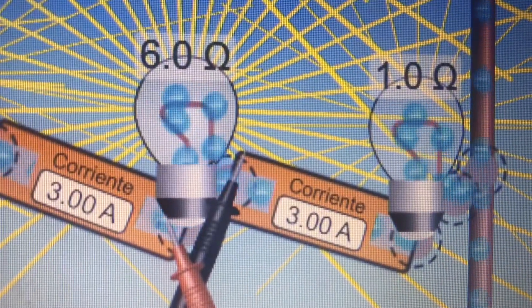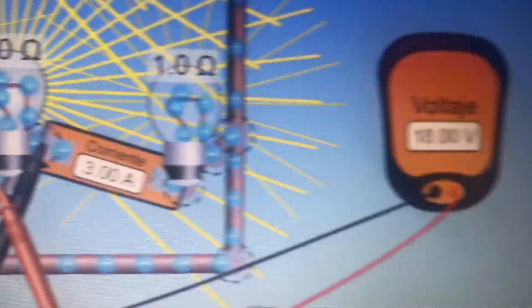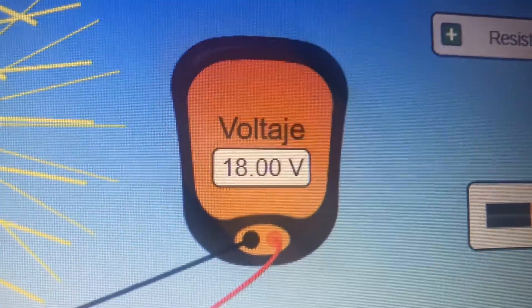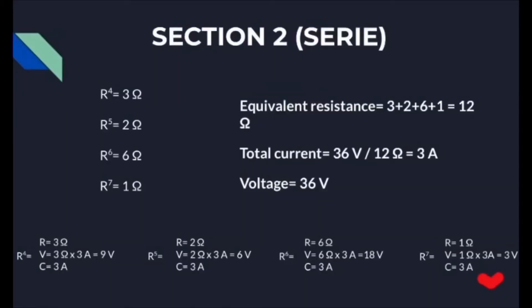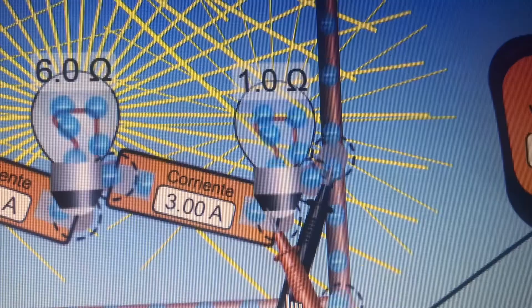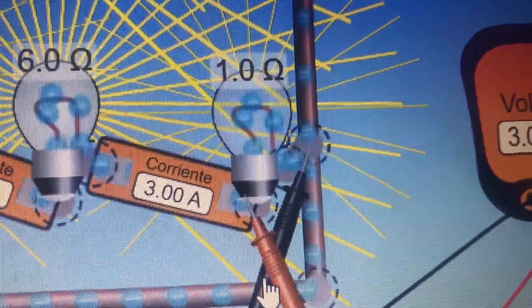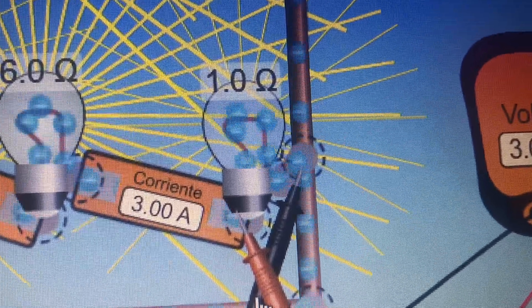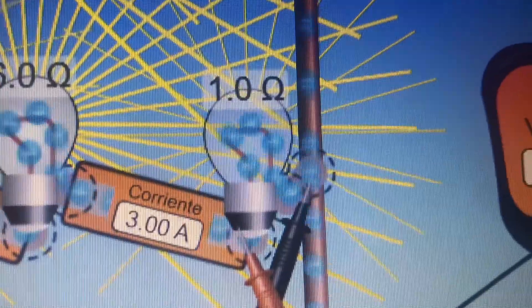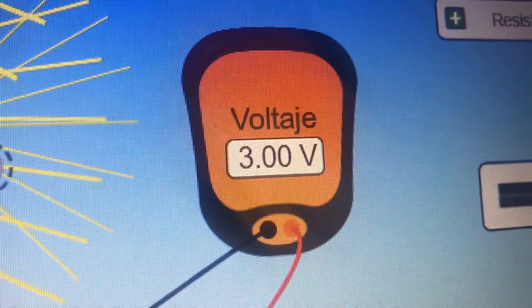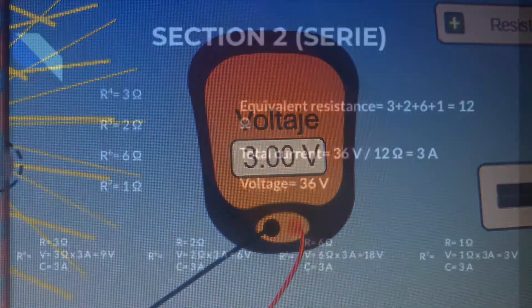For 6 ohms the voltage is 18 volts, as shown in the simulation. And for 1 ohm we get 3 volts — the result matches our calculations, with the simulation showing 1 ohm producing a voltage of 3 volts.